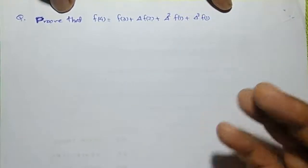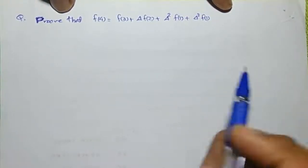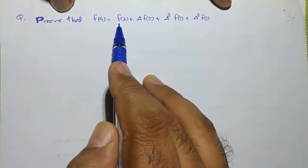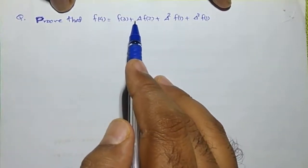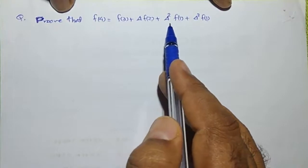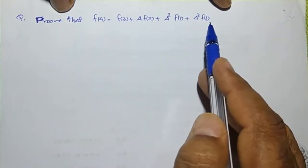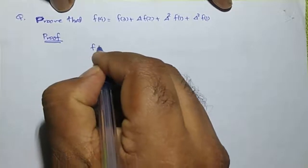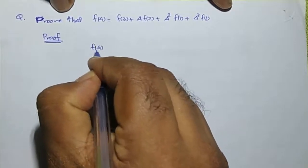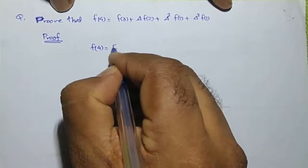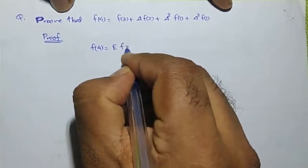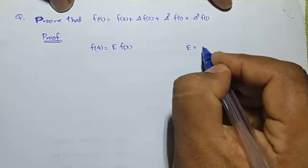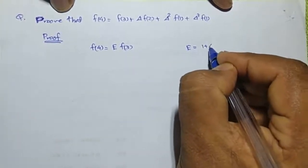We shall do another problem using the shift operator. Prove that f of 4 equals f of 3 plus delta f of 2 plus delta squared f of 1 plus delta cubed f of 1. We have f of 4 equals the shift operator E into f of 3, where E equals 1 plus delta.